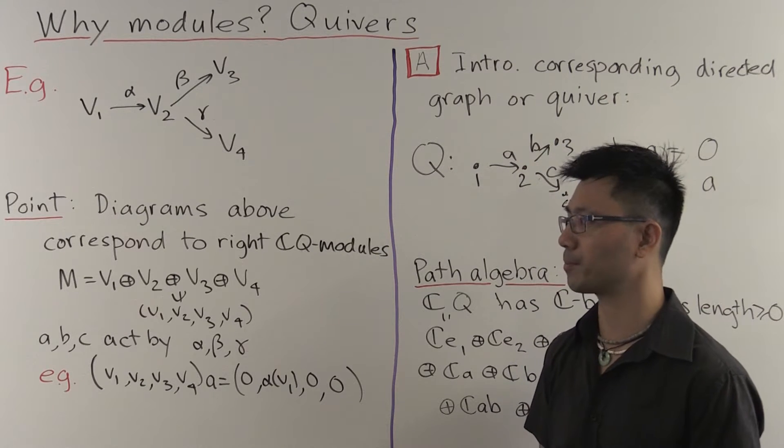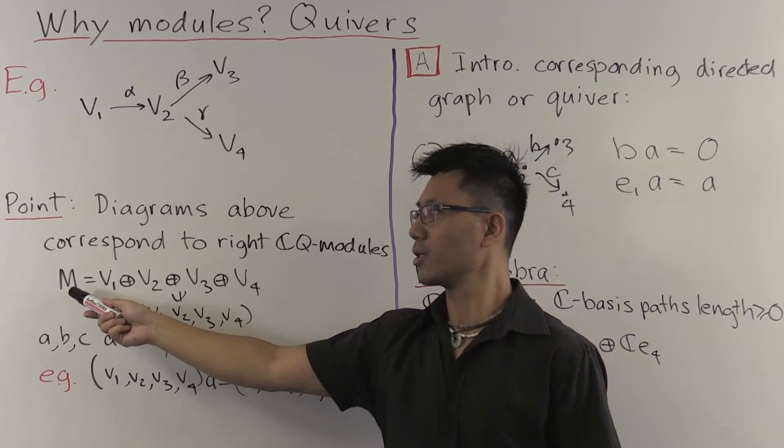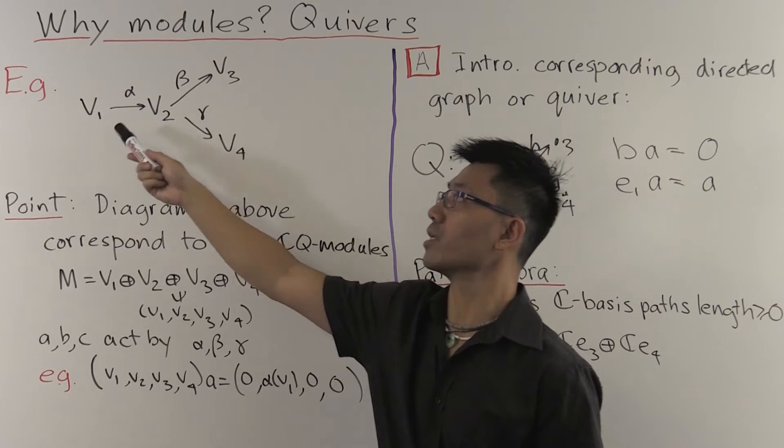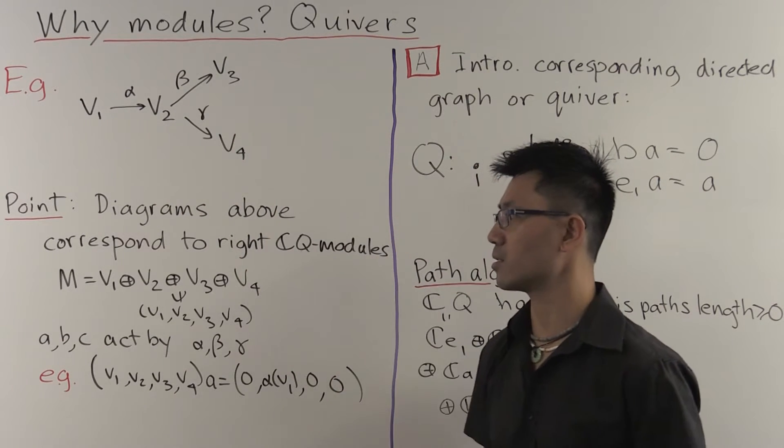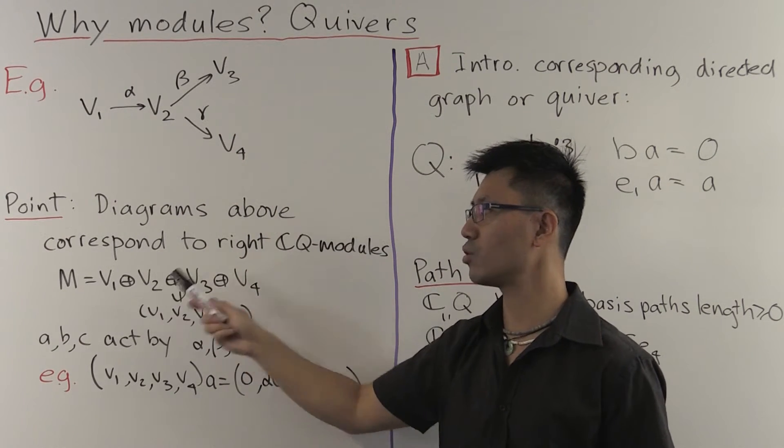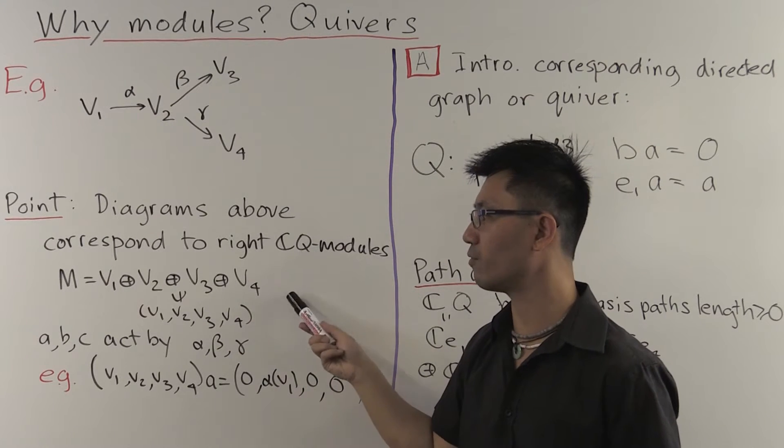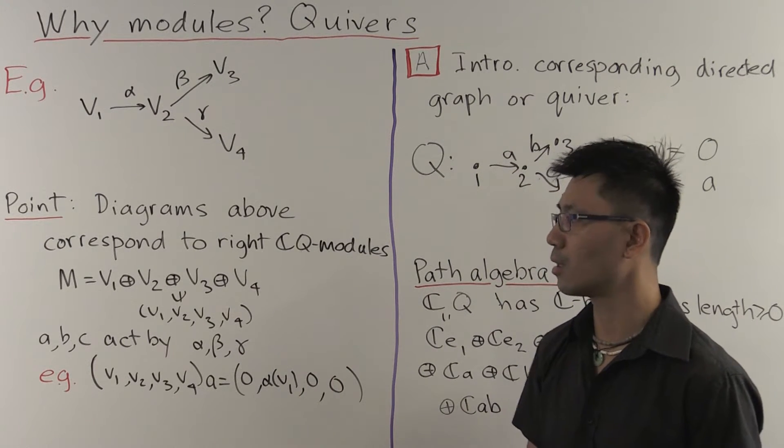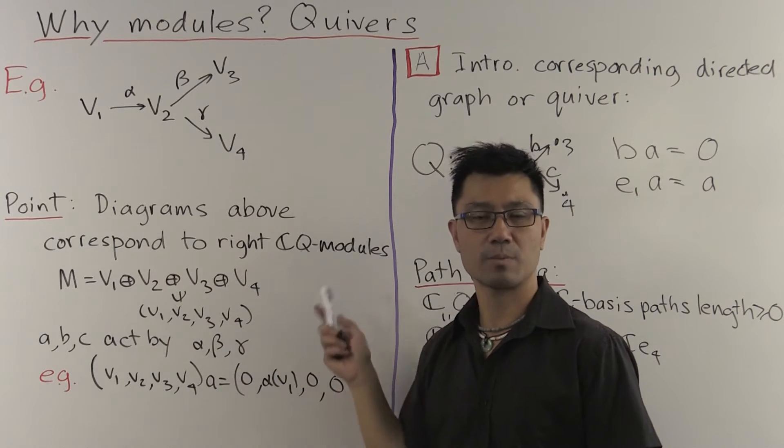So how does that work? If you're given a diagram like this, what's the corresponding CQ module? Well, it's the following. Let M equal the direct sum of these four vector spaces. V1, direct sum V2, direct sum V3, direct sum V4.